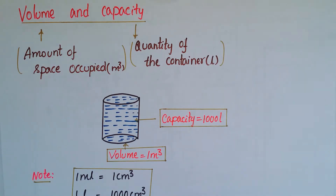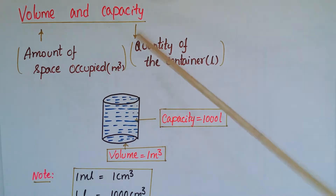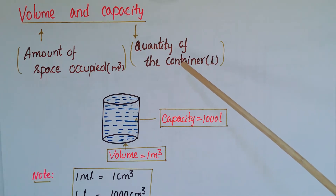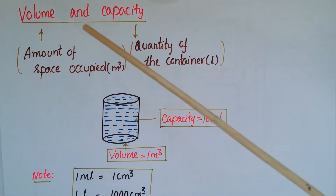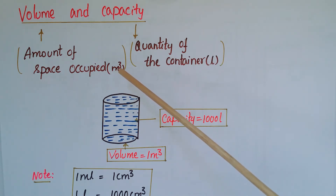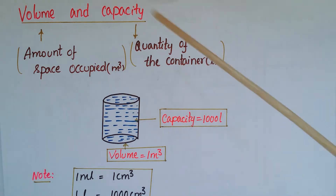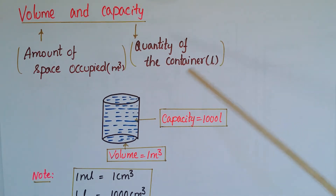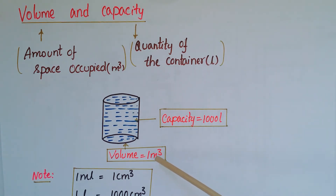Hello everyone, today I am going to explain the difference between volume and capacity. Volume is the amount of space occupied, and capacity is the quantity a container can hold. Volume can be measured in meter cube or centimeter cube, and capacity can be measured in liters. For example, a tank with a volume of one meter cube has a capacity of one thousand liters.